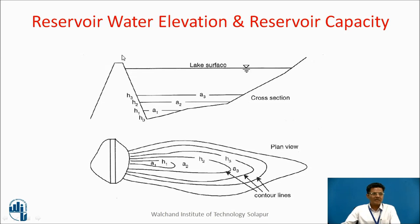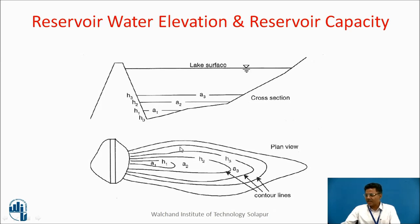This picture gives you the idea about reservoir water elevation and reservoir capacity. This is a dam and this is a reservoir. Water level may vary at different elevations. Area A3 is matching with elevation H3, area A2 enclosed is matching with H2, and area A1 is matching with H1. By using a planimeter one can find out these areas, which represent submerged areas at different elevations.